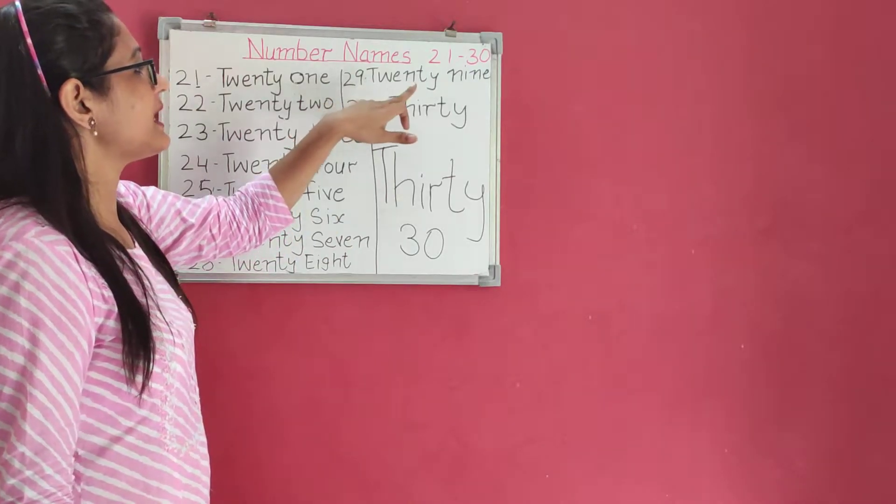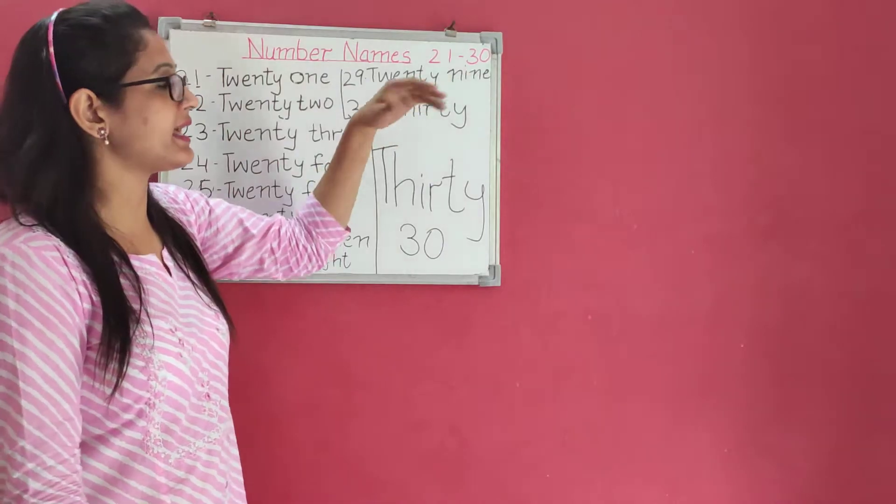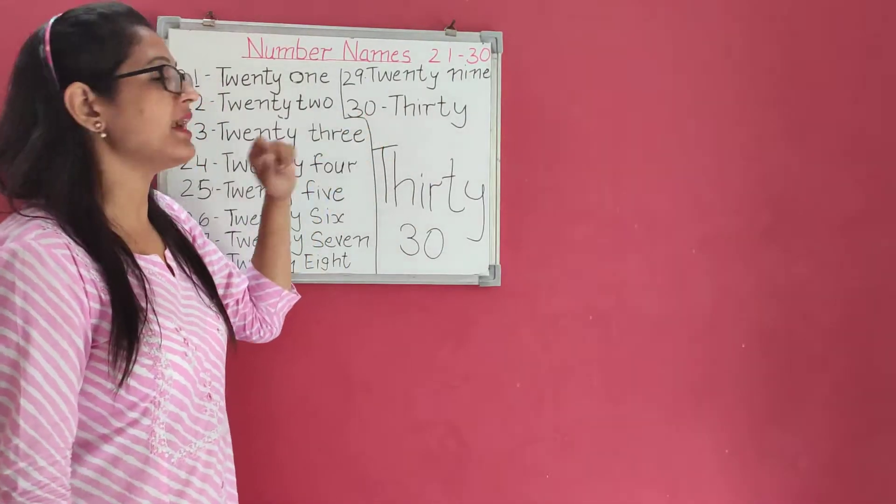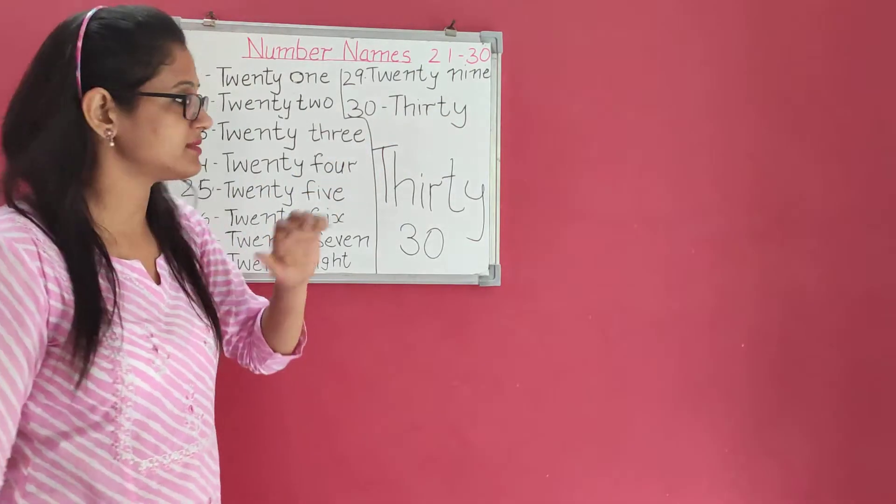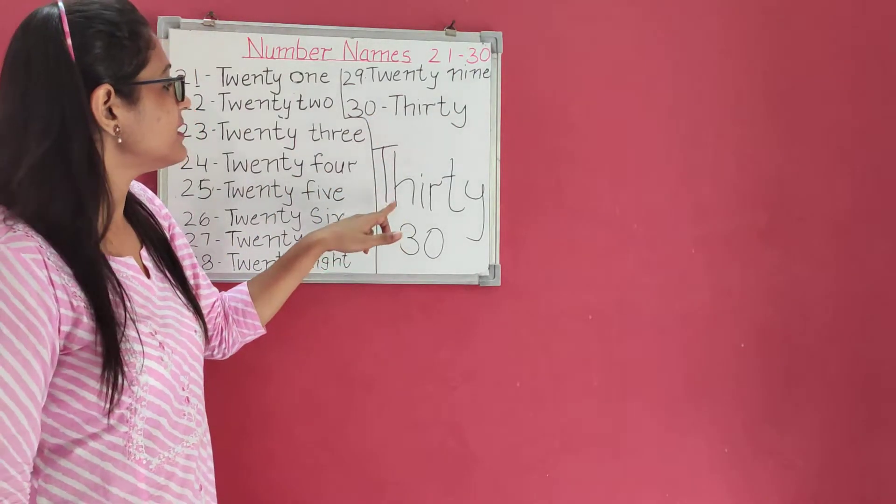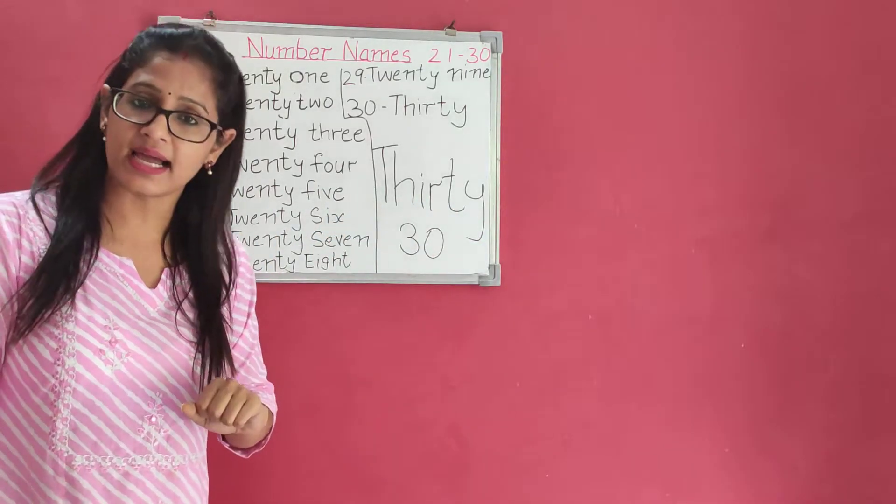Twenty-nine: T-W-E-N-T-Y, twenty, N-I-N-E, nine. And thirty: T-H-I-R-T-Y, thirty. I am repeating again. T-H-I-R-T-Y, thirty.